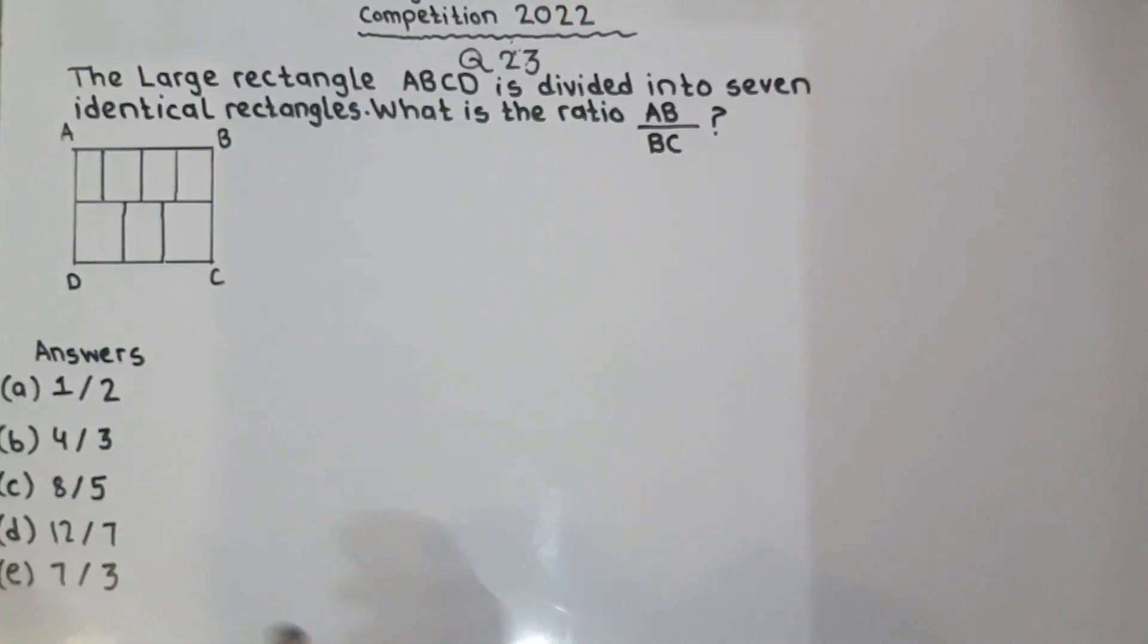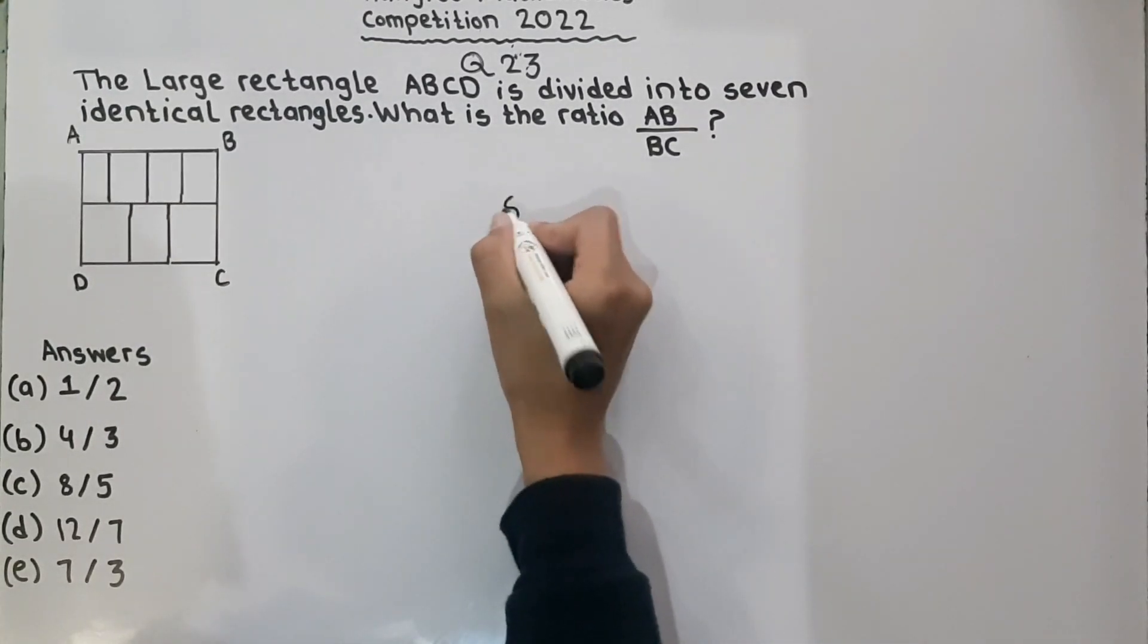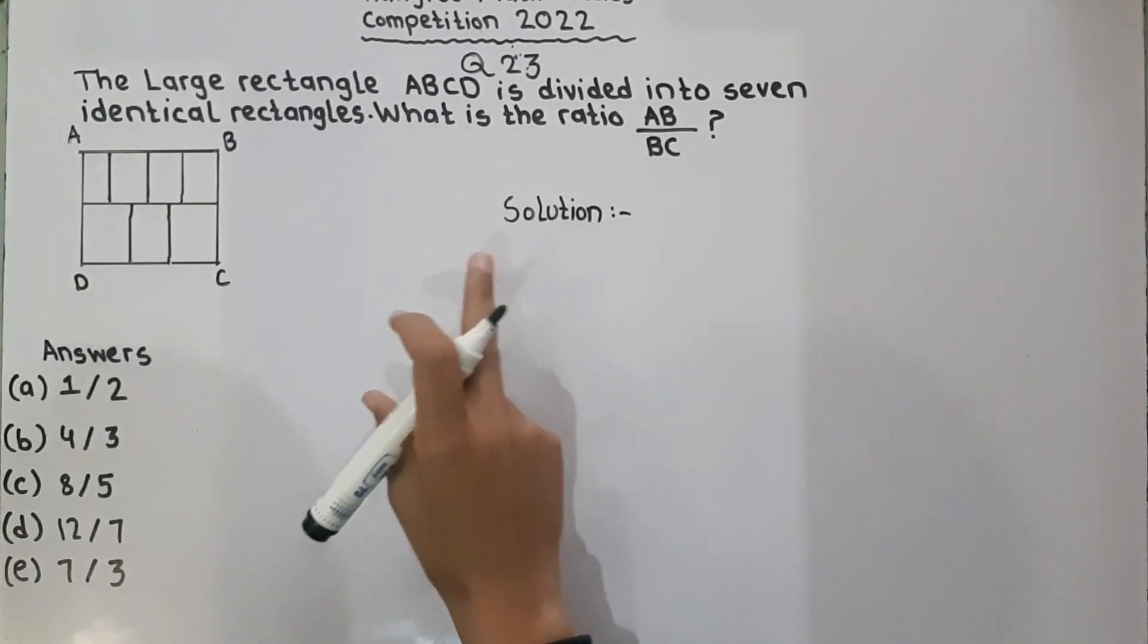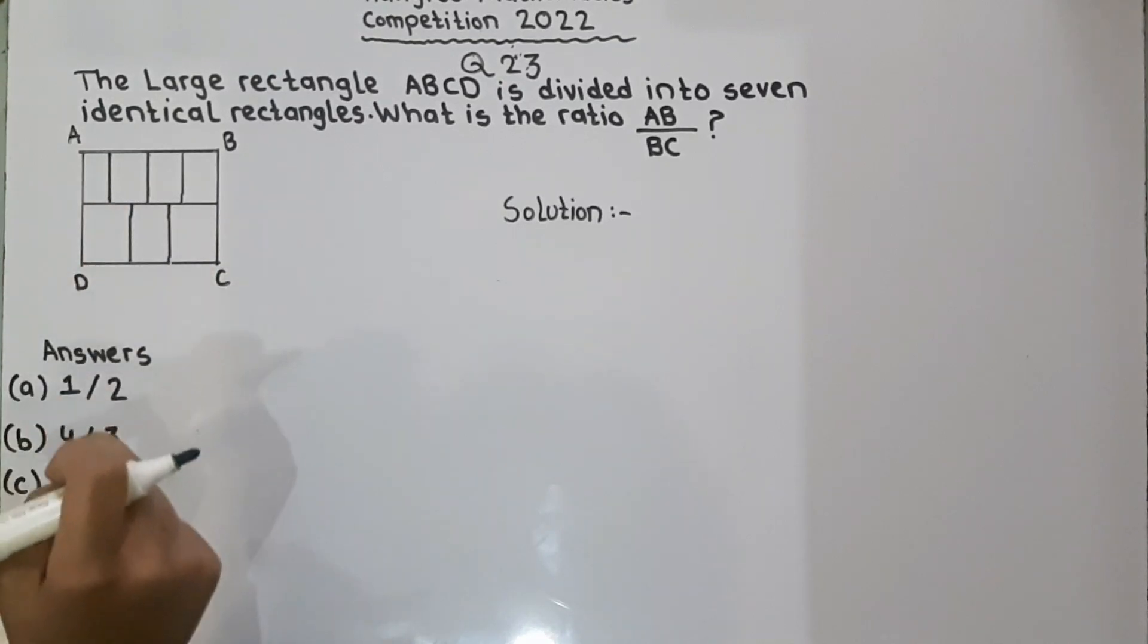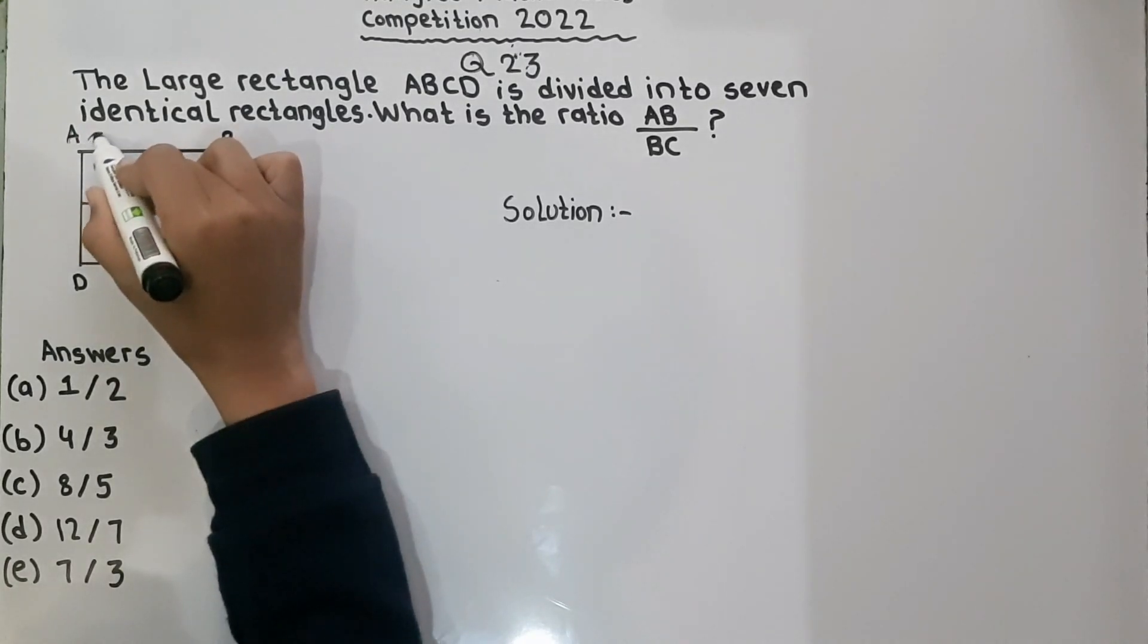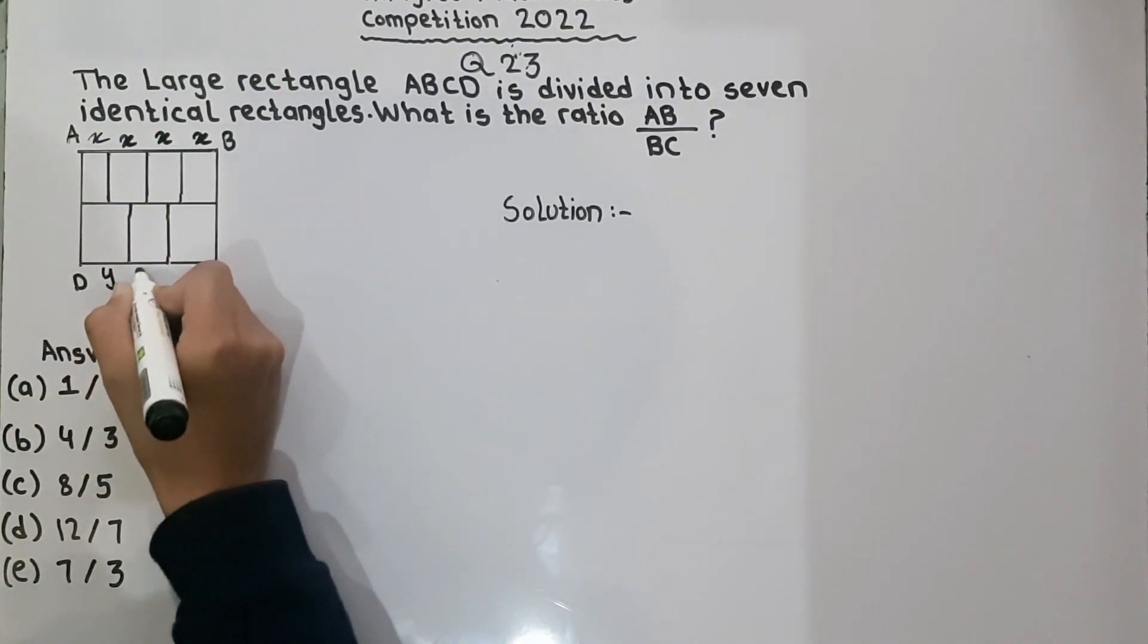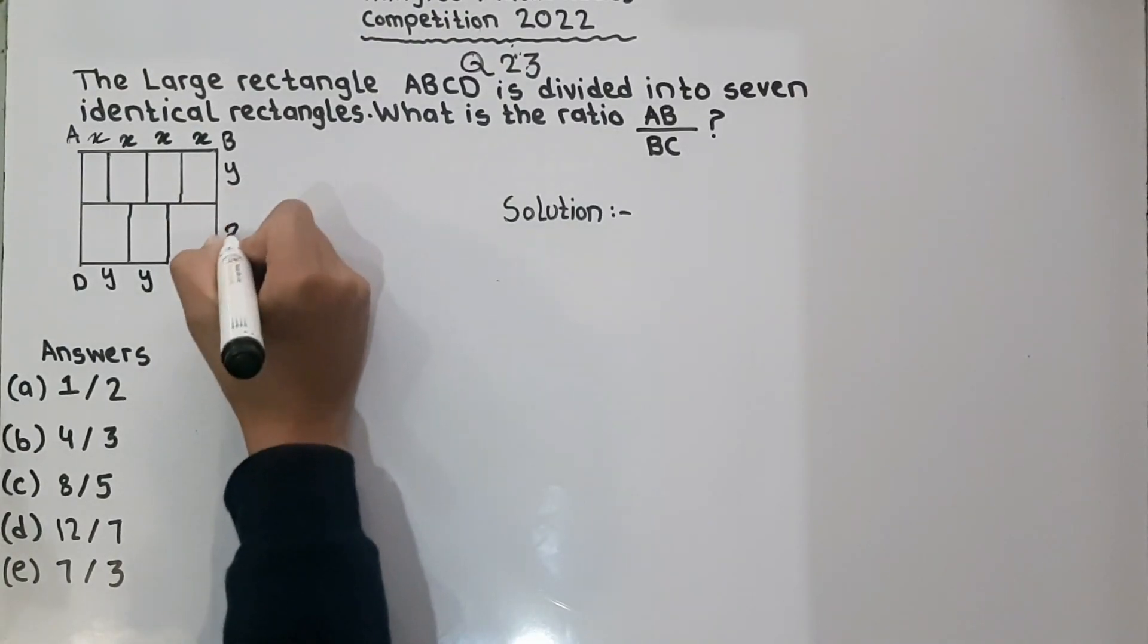Let's start to solve the question. We will start from here. They are saying that ABCD is divided into 7 identical rectangles. So first we will name these 7 identical rectangles. Let's give the upper rectangles name X. And the lower rectangles we can give them name Y.